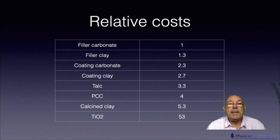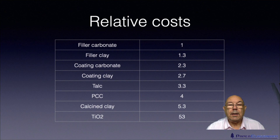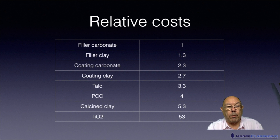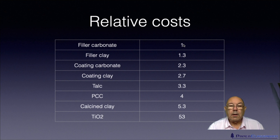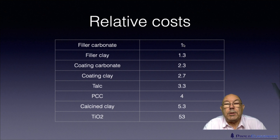And finally, TiO2. It is by far the best filler or pigment you could use — head and shoulders above the others in terms of refractive index and opacifying power. But that's not a mistake and I haven't missed out the decimal point: it's 53 times more expensive than filler carbonate, approximately £4,000 a tonne compared to £75 a tonne for filler carbonate. So TiO2 is always used sparingly for specialist uses — it's used in currency paper, for example — and we'll talk about TiO2 more later in this module.